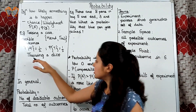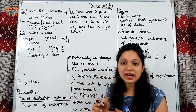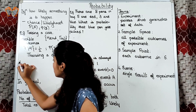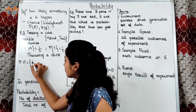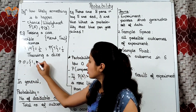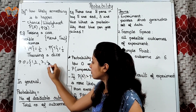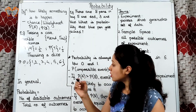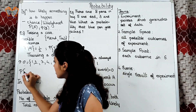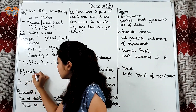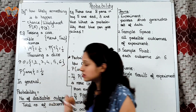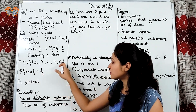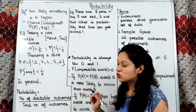The next example is throwing a dice. We know a dice has 6 surfaces or 6 faces. So, the possible outcomes are either we get number 1, 2, 3, 4, 5, or 6. So, probability of getting any one number will be 1 by 6. Probability of 2 will be 1 by 6, probability of 6 will be 1 by 6, and so on.